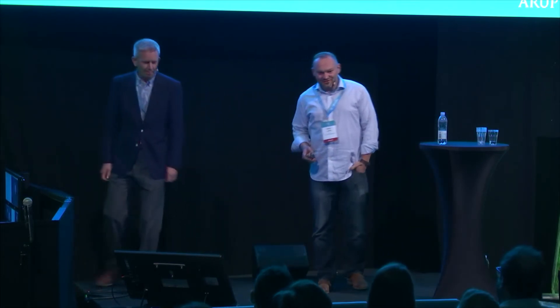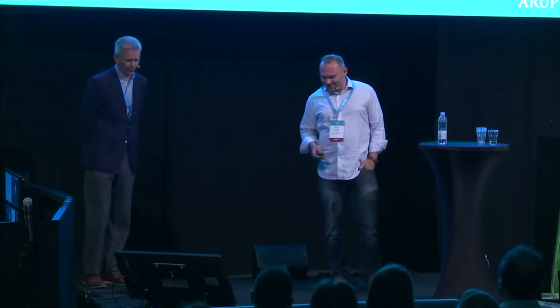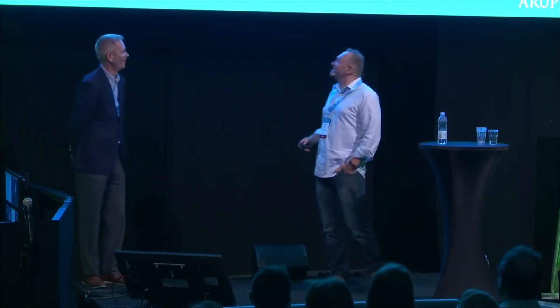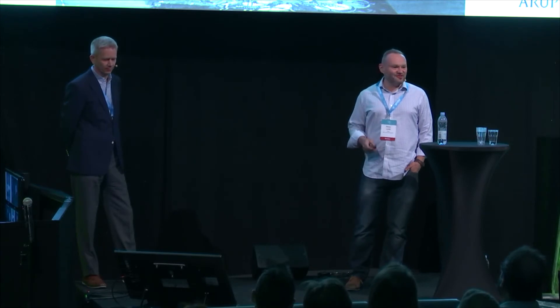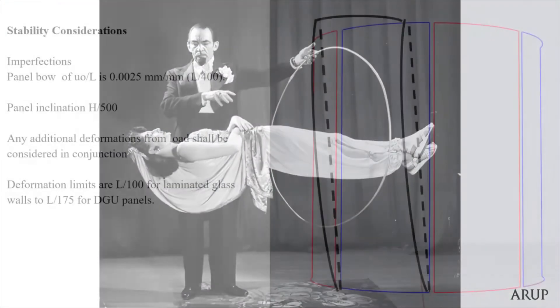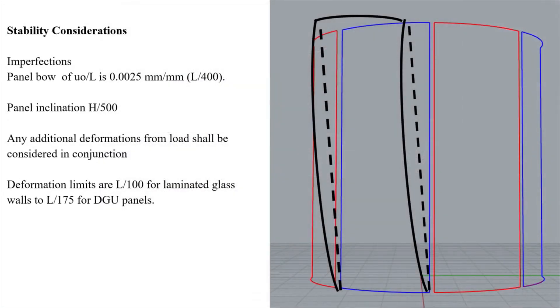So it takes some engineering leaps to make that magic happen. First thing to consider with all those projects is how the panels are manufactured. In the buckling case, initial imperfections are quite important. If you consider typical imperfections of L/300, for a smaller three-metre window that's nine millimetres — which is kind of acceptable.